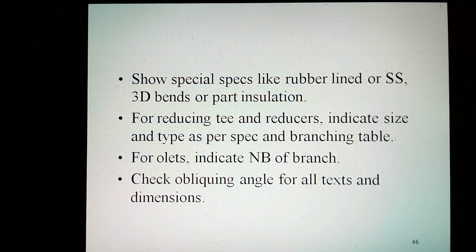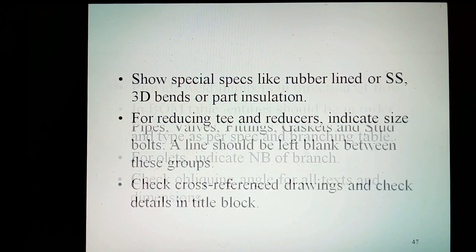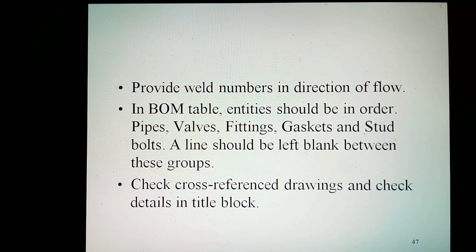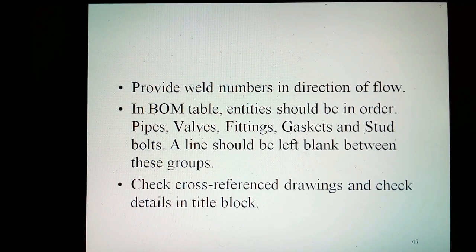For reducing T and reducers, indicate size and type as per spec and branching table. For orifices, indicate the branch. Check the lettering angle for all texts and dimensions. Provide weld numbers in direction of flow. In the line table, items should be in order: pipes, valves, fittings, gaskets, and stud bolts — with lines left blank between these groups. Check cross-reference drawings and check details in the title block.